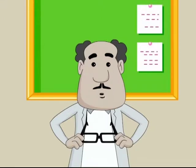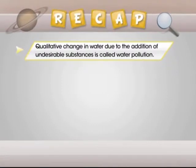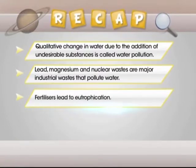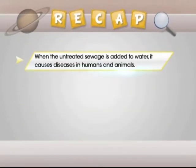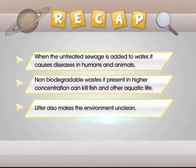Alright friends, it is now time to dive again into the pool of information. Let's have a quick recap of what we have learnt today. Qualitative change in water due to the addition of undesirable substances is called water pollution. Lead, magnesium and nuclear wastes are major industrial wastes that pollute water. Fertilisers lead to eutrophication. Untreated sewage contains pathogens like bacteria. When untreated sewage is added to water, it causes diseases in humans and animals. Non-biodegradable wastes, if present in higher concentration, can kill fish and other aquatic life. Litter also makes the environment unclean.